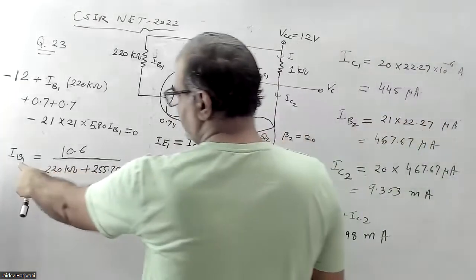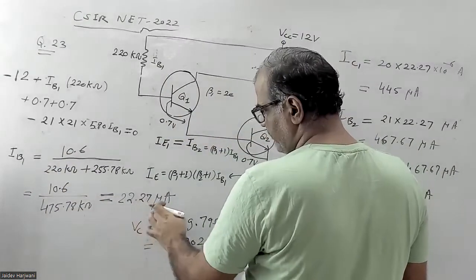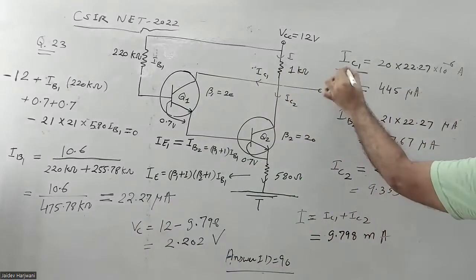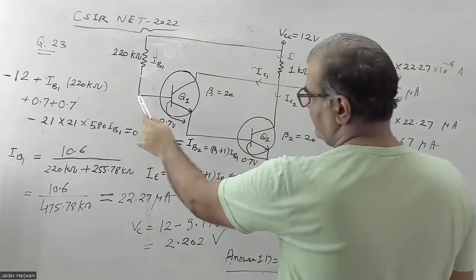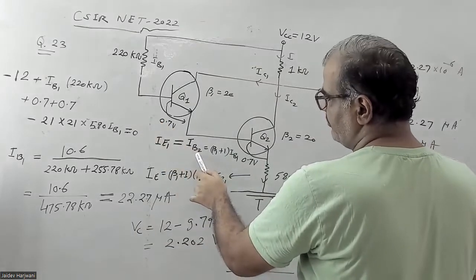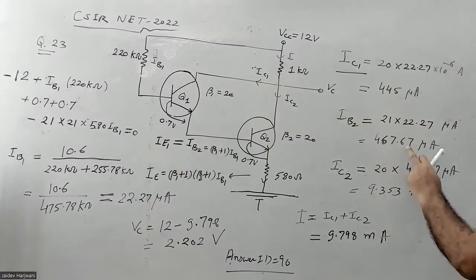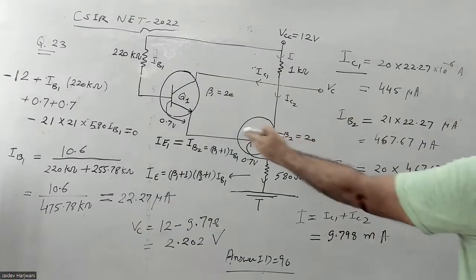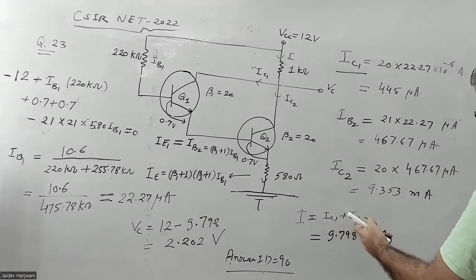I have calculated the current IB1 — its value comes out to 220.27 microampere. Once I know IB1, I can calculate IC1. Once I know IB1, I also know IB2. The IB2 value is 461.67 microampere. Knowing IB2, I can calculate IC2, which is beta 2 into IB2, and this comes out to 9.353 milliampere. Now I know IC1 and IC2.